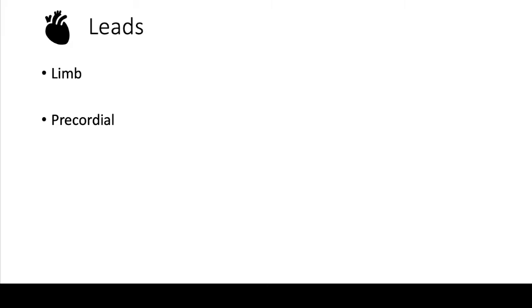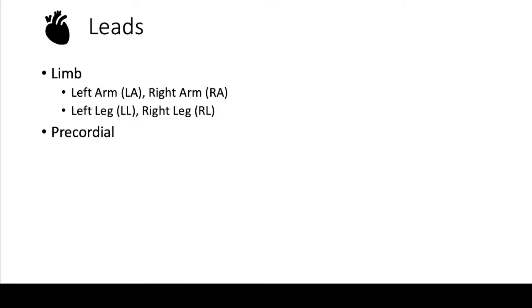The first thing we have to know are the leads. There are two types of leads: limb leads and precordial leads. The limb leads are pretty easy because they're self-explanatory. You have LA, which is left arm; RA, which is right arm; LL, which is left leg; and RL, which is right leg.